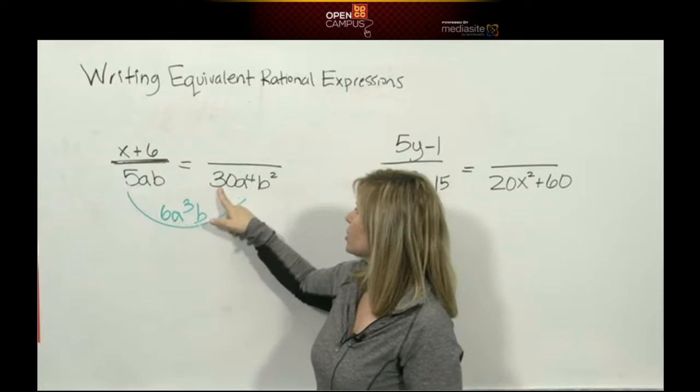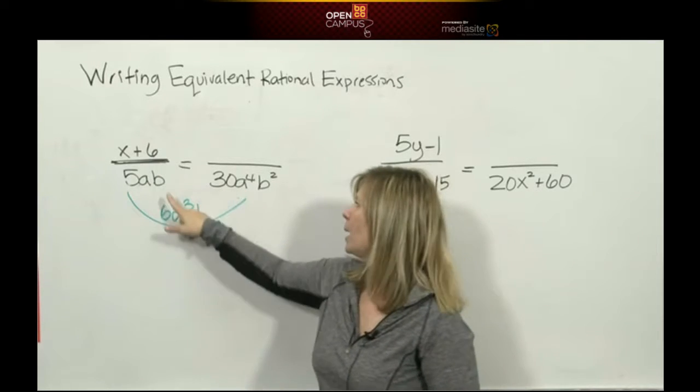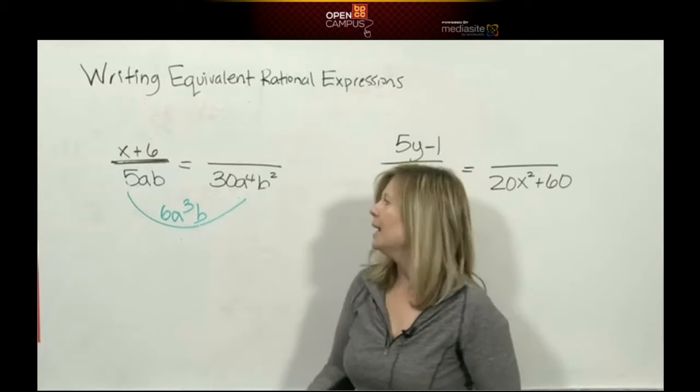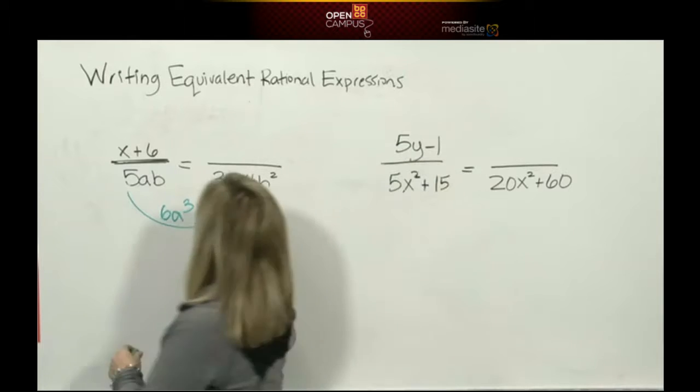Let's make sure we're right. 5 times 6 is 30, a times a³ is a⁴, b times b is b². Good. Now that we know what we multiply the denominator by, to keep balance we're going to multiply the numerator by the same amount.